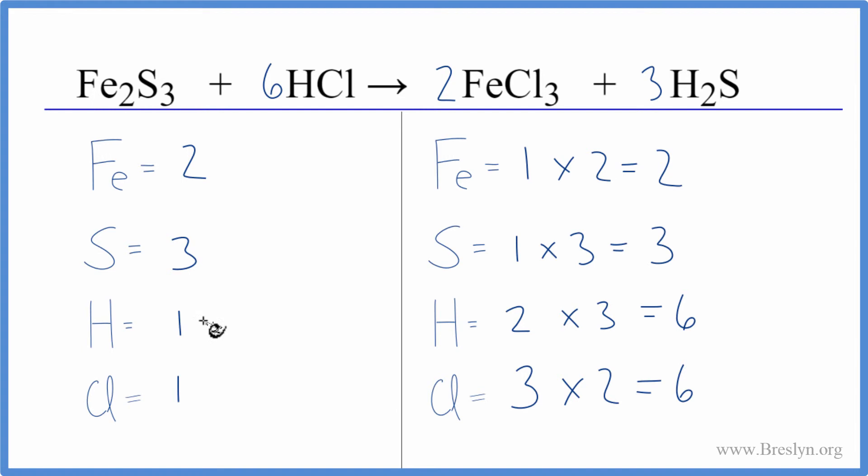We could just put a 6 in front of the HCl. 1 times 6 would balance the hydrogens, and because the 6 applies to everything here, 1 times 6 also balances the chlorine atoms.